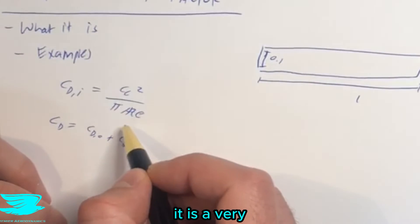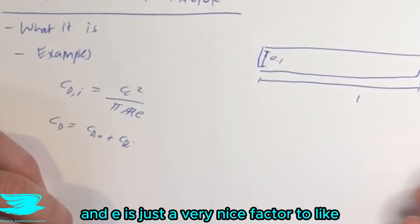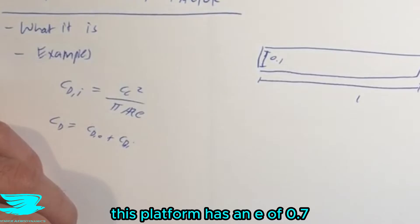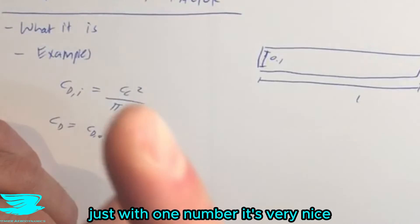But nevertheless, it is a very important equation to know because we use this very often. And E is just a very nice factor to say, okay, this planform has an E of 0.7, 0.8. We can quickly tell which one is more efficient just with one number. It's very nice.